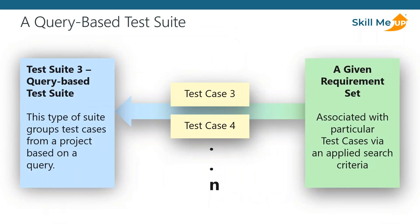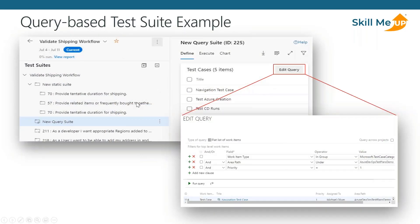The last test suite variant is the query-based test suite, similar to the requirements-based in that a query drives it, but the query can be any sort of criteria and it selects against a different work item type — Microsoft test case category. We're looking for test cases, not requirements. The query-based test suite allows you to ring-fence test cases. For example, you could query for all test cases within a certain area path where the priority equals one — a classic example of quickly creating a priority-one test suite to hit all your priority-one regression tests right after a hot fix or update.